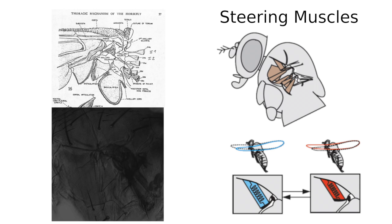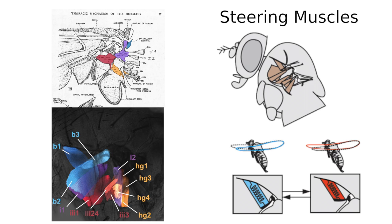These 12 steering muscles are known as the direct-flight muscles because they attach directly to four minute processes called sclerites at the base of each wing. By pulling on these sclerites, the direct-steering muscles are able to distort the flapping motion of the wing, allowing the fly to steer and maneuver.